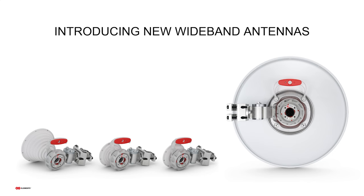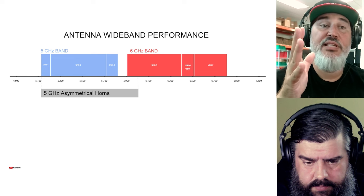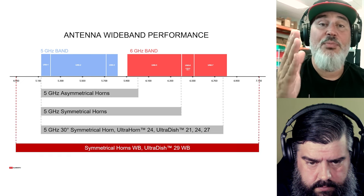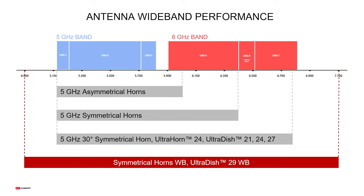Looking at antenna performance: the 5 GHz asymmetrical horns operate from lower 5 to about 6 GHz; the 5 GHz symmetrical horns from lower 5 to about 6.4 GHz; and a few 5 GHz antennas like the Symmetrical 30, Ultra Horn, and Ultra Dishes work from lower 5 to about 6.8 GHz. The new wideband symmetrical horns and new wideband ultra dish work from 4.9 all the way up to 7.1 GHz. The current 5 GHz antennas are not going anywhere — they'll still be produced for networks that are always 5 GHz or in regions without 6 GHz access.